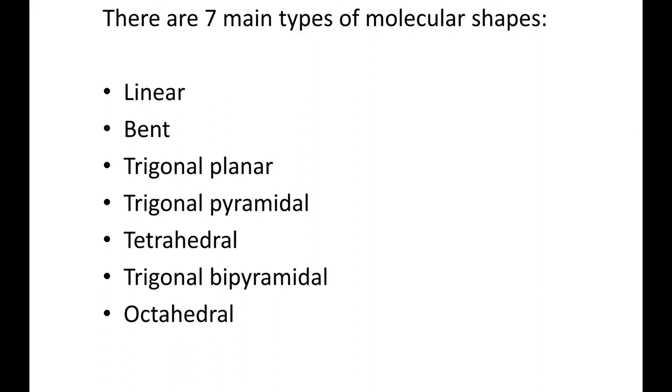There are seven main types of molecular shapes: linear, bent, trigonal planar, trigonal pyramidal, tetrahedral, trigonal bipyramidal, and octahedral.